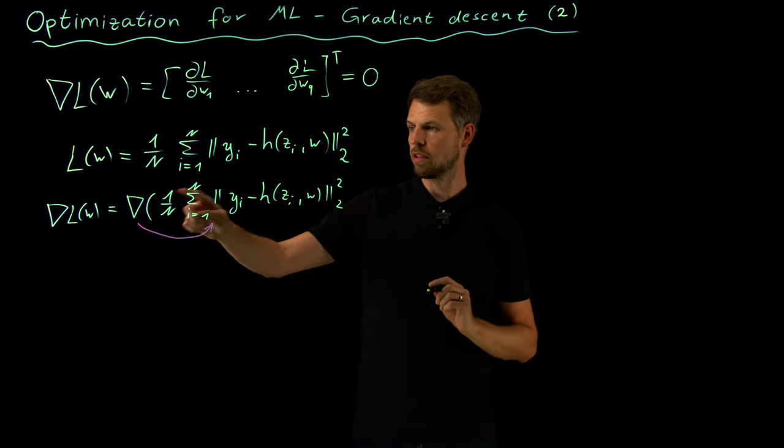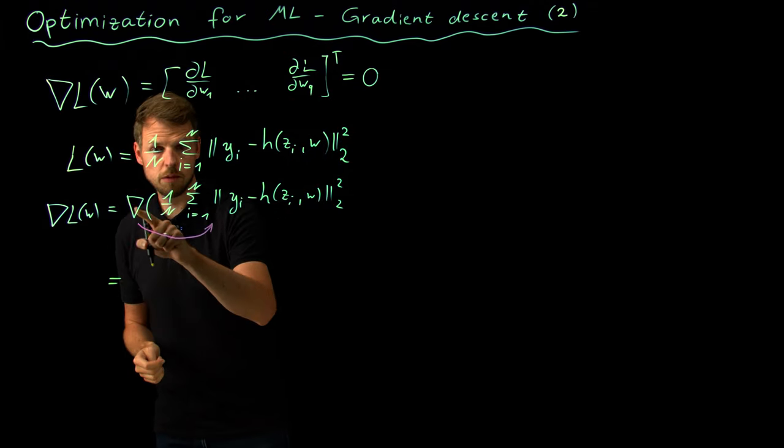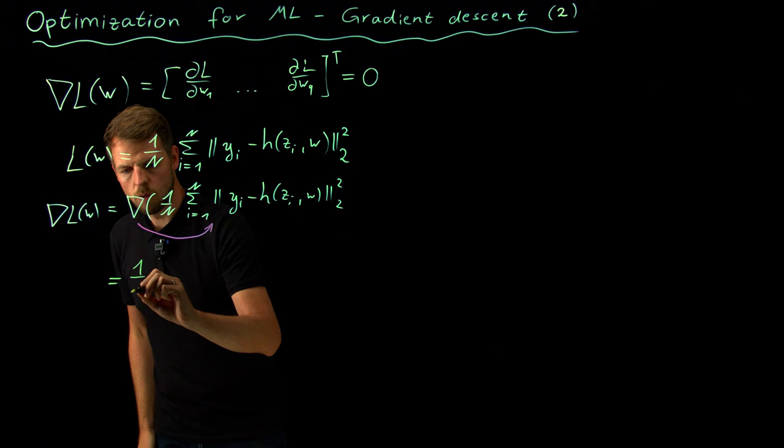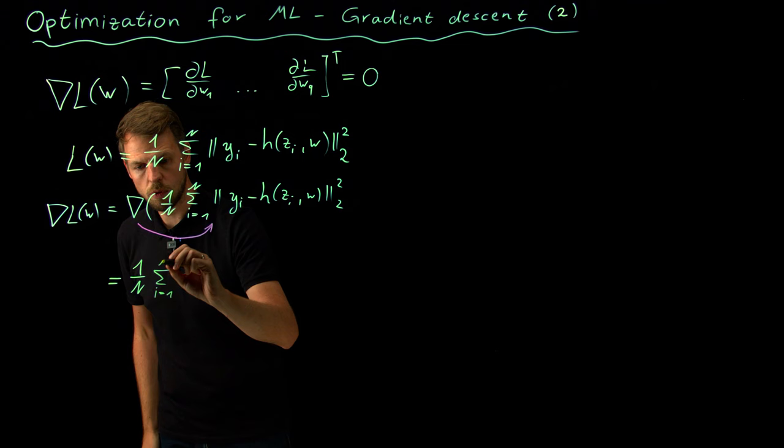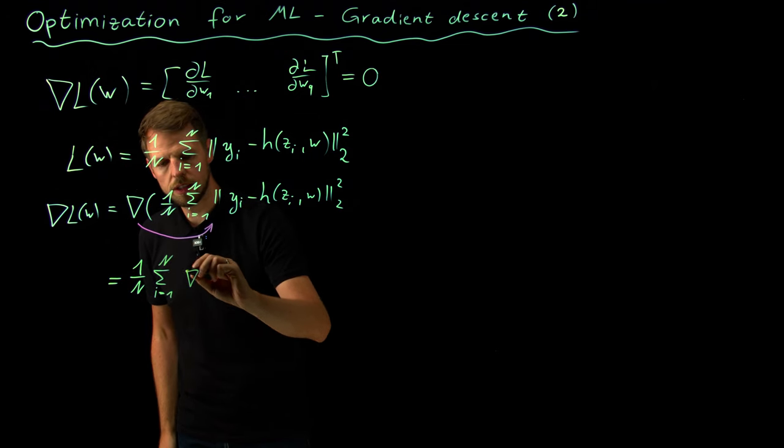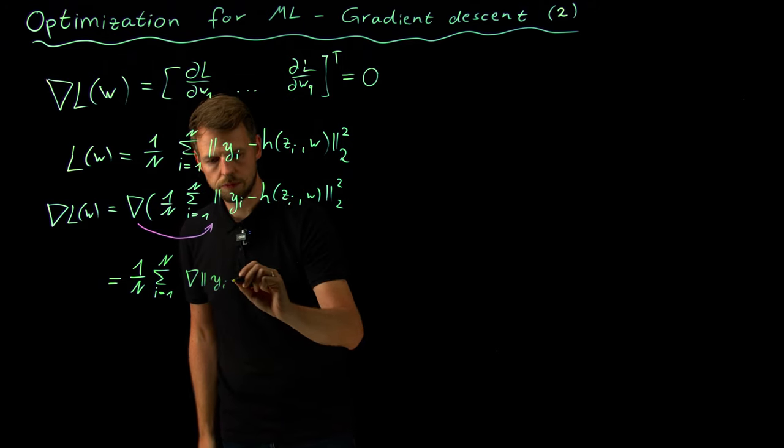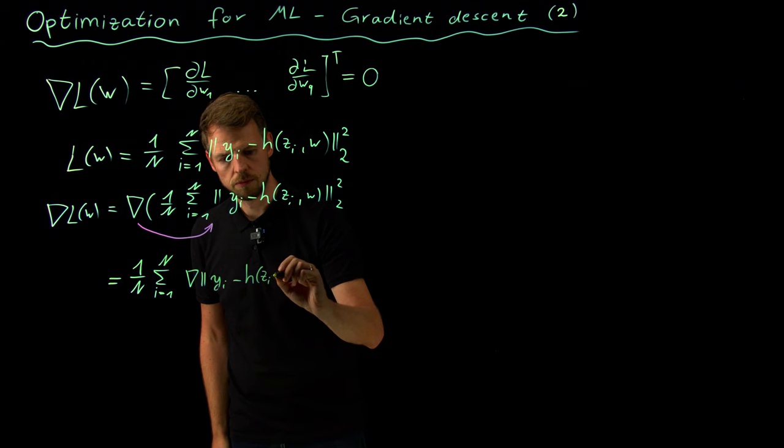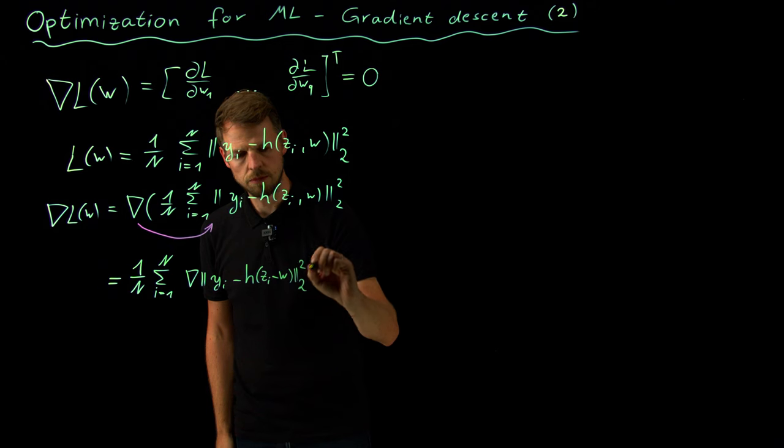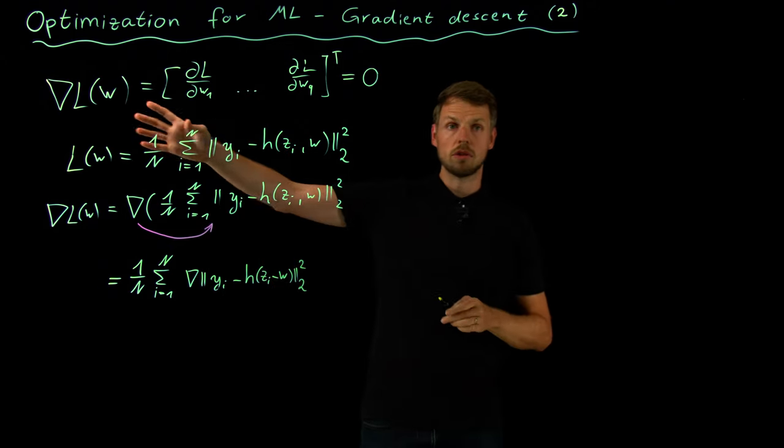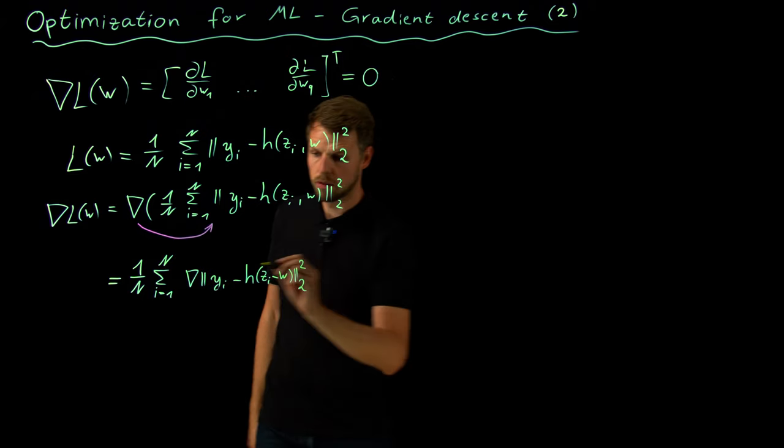Later on, in particular, if this capital N becomes very large. So what I'm going to do now is just say let's move this inside: this is 1 over N, the sum from 1 to N over the gradients of this expression here.